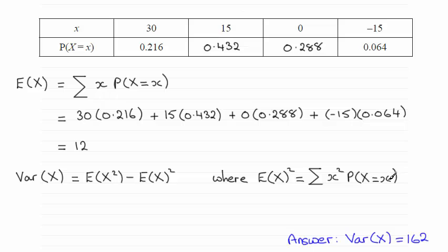So for E(X²) then, you've just got to do, for instance, 30 squared times 0.216 plus 15 squared times 0.432 and so on for these other two values.